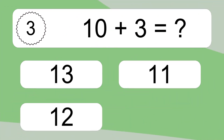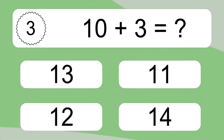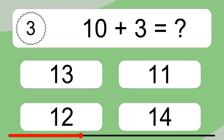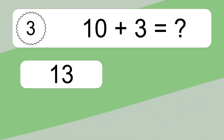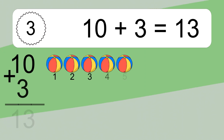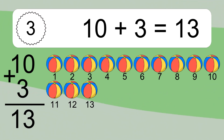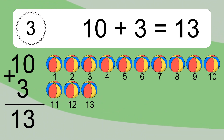10 plus 3 equals what? 10 plus 3 equals 13. Let's count it: 1, 2, 3, 4, 5, 6, 7, 8, 9, 10, 11, 12, 13.